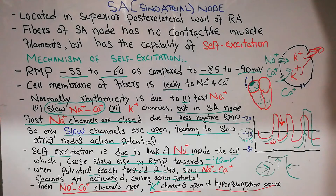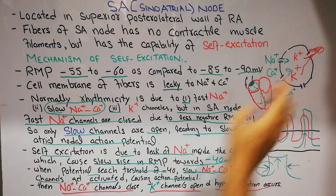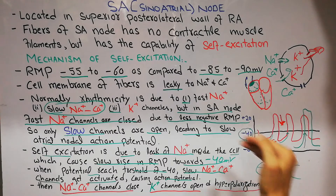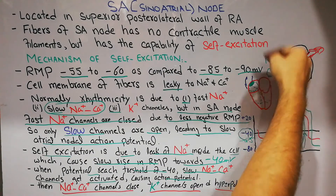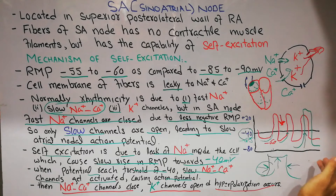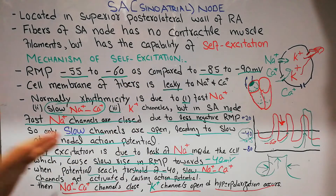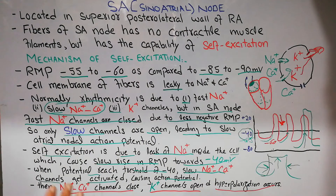When hyperpolarization has occurred and the RMP has reached minus 55 to minus 60, the potassium channels begin to close again and sodium-calcium leakiness starts again. The membrane potential slowly rises toward minus 40 — the threshold — again. Once threshold is reached, slow sodium-calcium channels open again, depolarization occurs, then potassium moves out, and repolarization and hyperpolarization occur again. This entire process repeats again and again throughout a person's life, producing continuous self-excitation of the SA node.